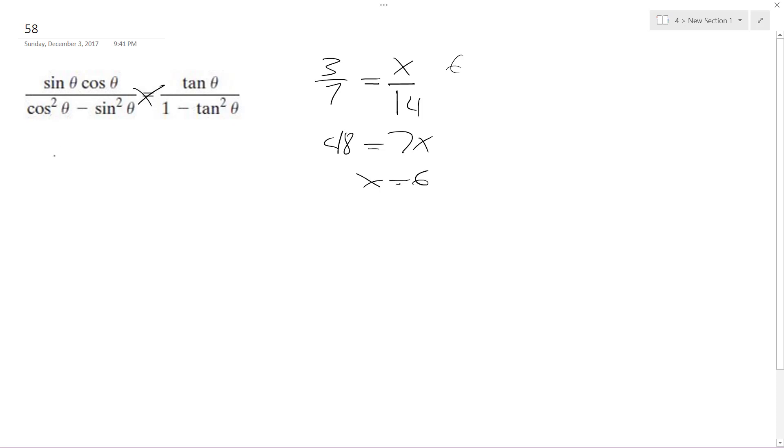what I'm going to do here is cross-multiply, so I get sine theta cosine theta times quantity 1 minus tangent squared theta,